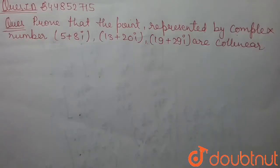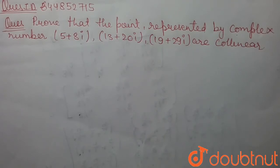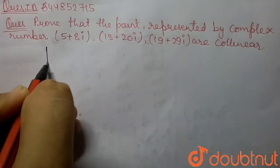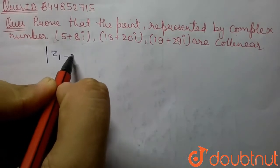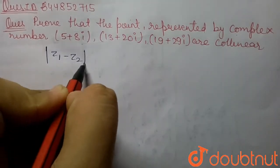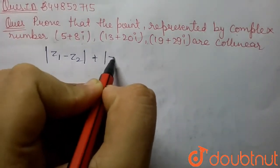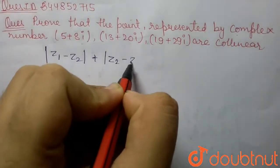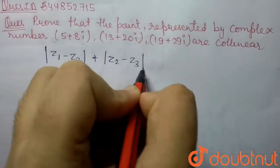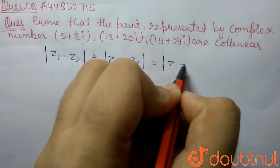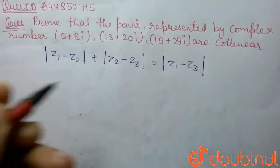Hello everyone. Our today's question is: prove that the points represented by the complex numbers 5+8i, 13+20i, and 19+29i are collinear. The collinearity property for complex numbers states that |z1 - z2| + |z2 - z3| = |z1 - z3|.